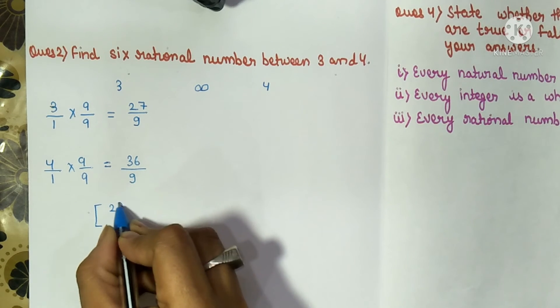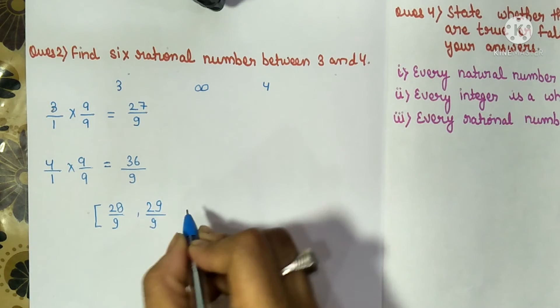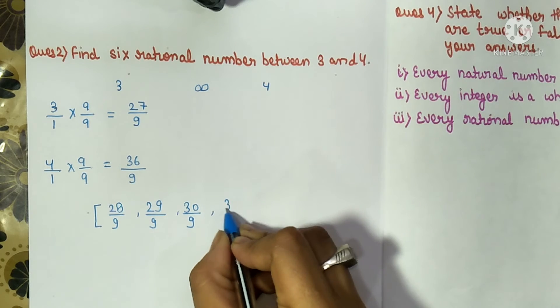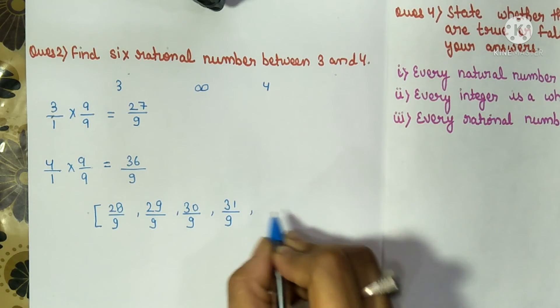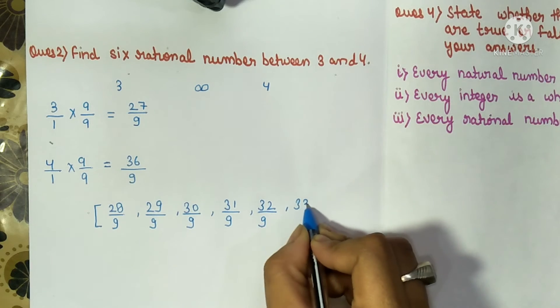So let's take the numbers: after twenty-seven comes twenty-eight by nine, twenty-nine by nine, thirty by nine, thirty-one by nine, thirty-two by nine, and thirty-three by nine.